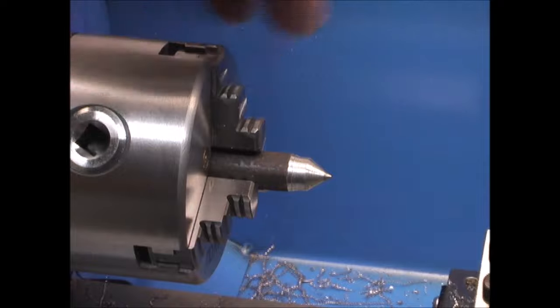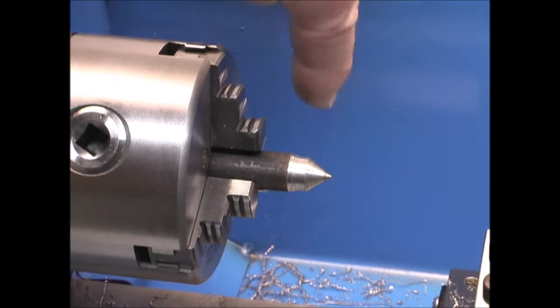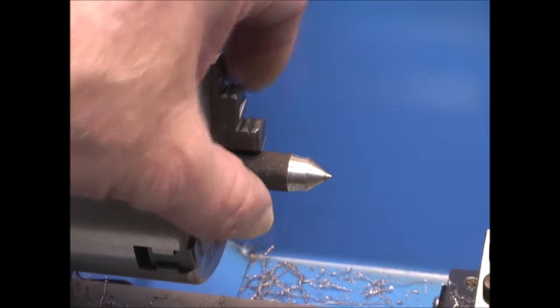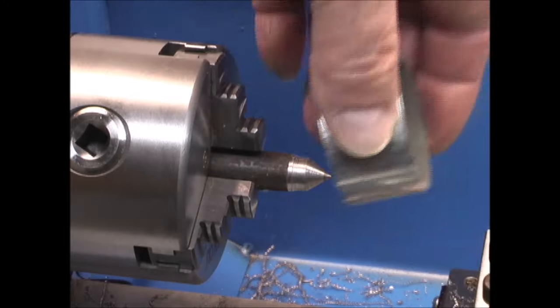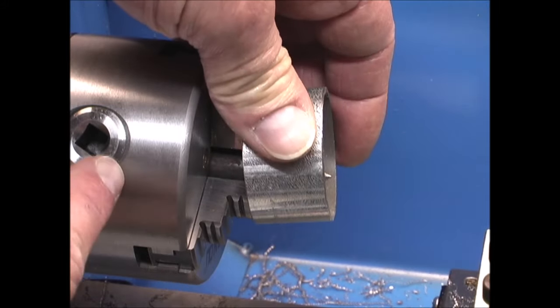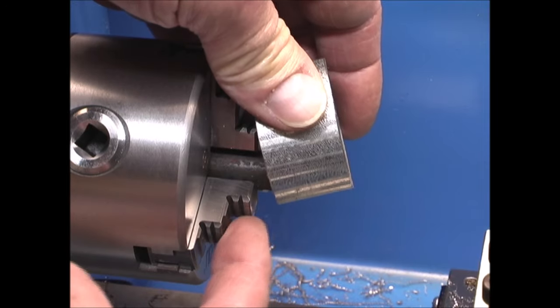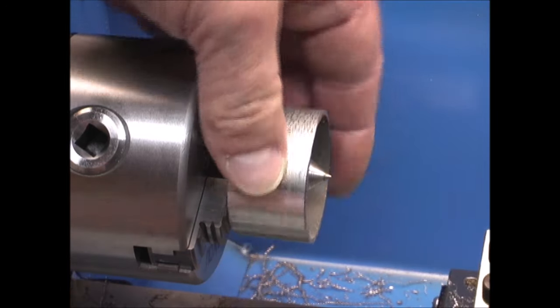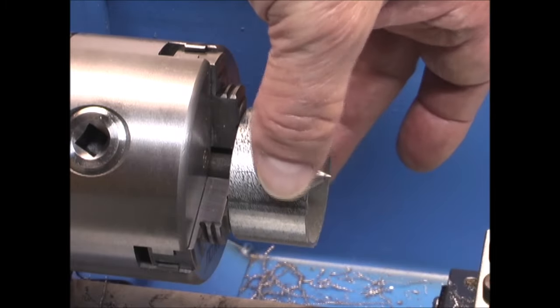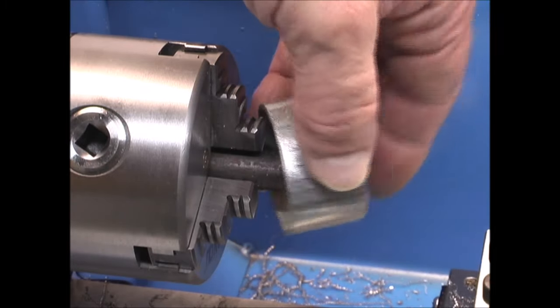On the chuck, normally you would have a shaft in here and it clamps it on here. You would close the jaws to clamp on there. But you could also cut something like this on here, and you put it over the jaws and open the jaws, and then this part of the jaw grips onto the cylinder and holds it internally from the inside.